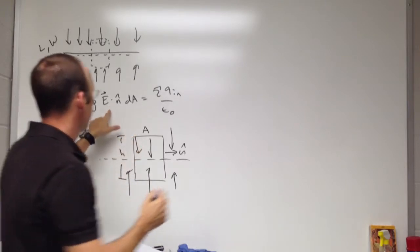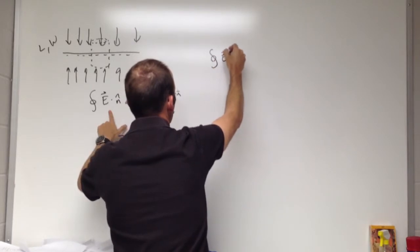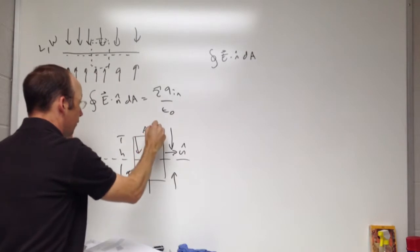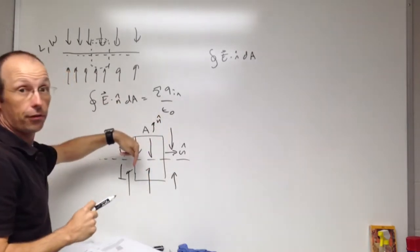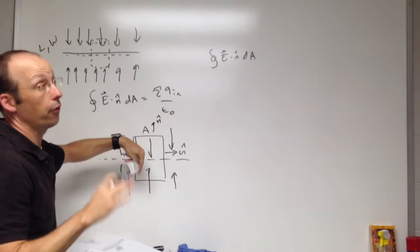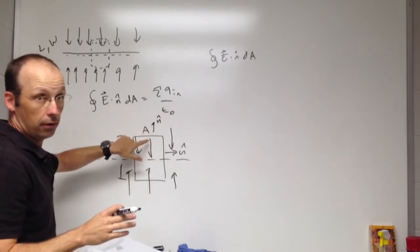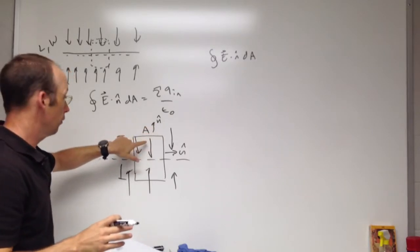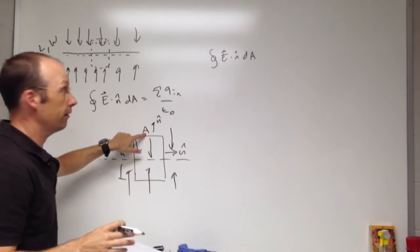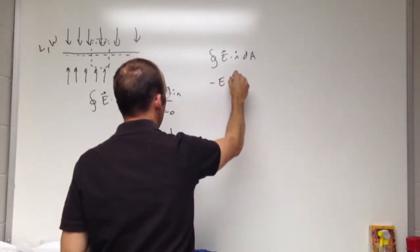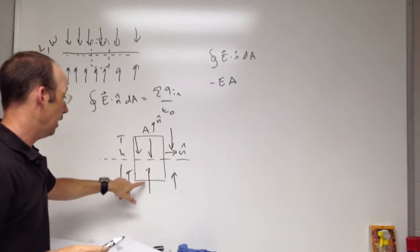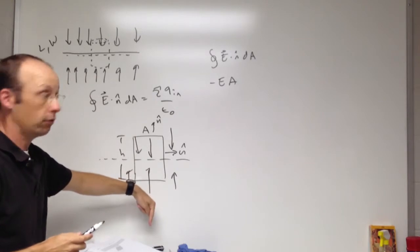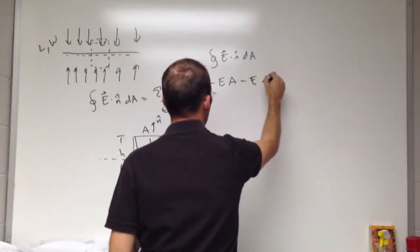What about the top? On the top, N-hat points upward but E points down — they're in opposite directions. So this is negative E times the area, because it's the cosine of 180. I get negative EA. What about the bottom? Again, the electric field points downward and N-hat points downward too, so I get another negative EA.